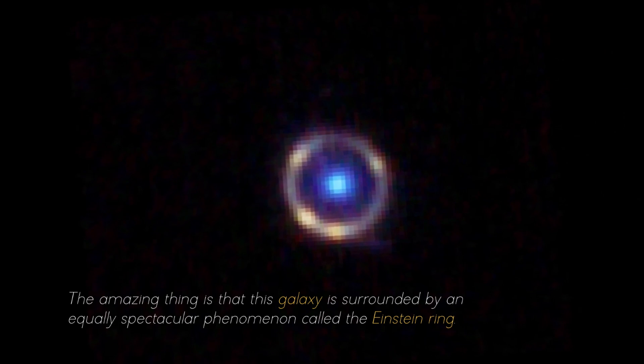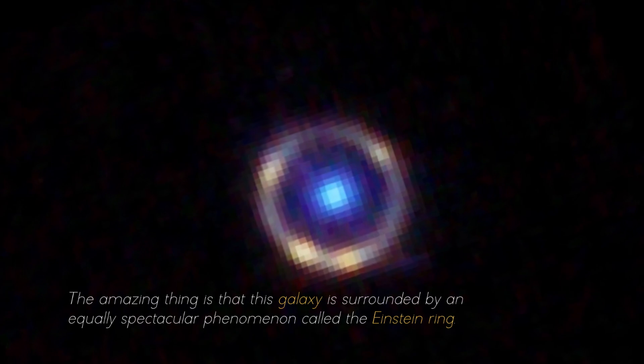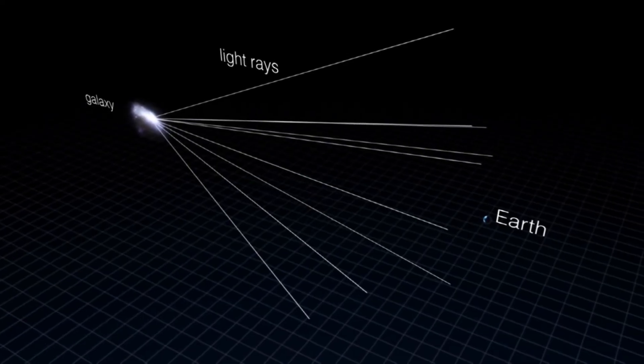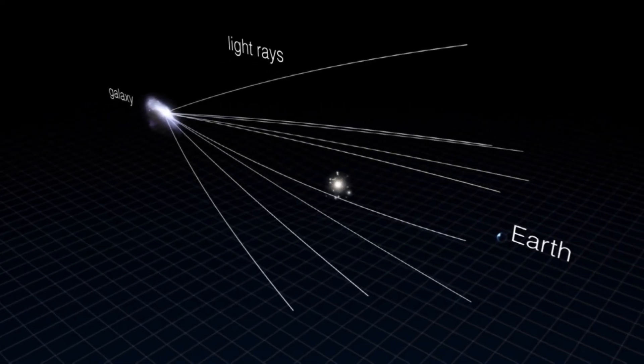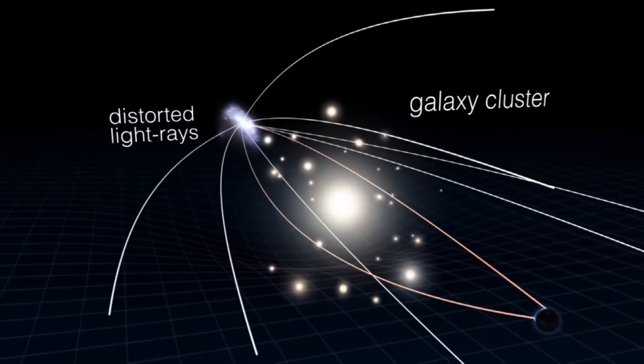The amazing thing is that this galaxy is surrounded by an equally spectacular phenomenon called the Einstein Ring. This phenomenon occurs when light from a distant galaxy is deflected and amplified due to the gravitational influence of a nearby galaxy.